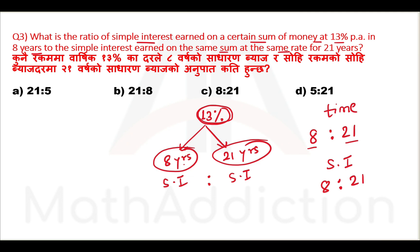This is the right answer. The condition here is: the interest rate is the same for the year, and the principal is the same for the year. This is the same year ratio, which equals the same year ratio.